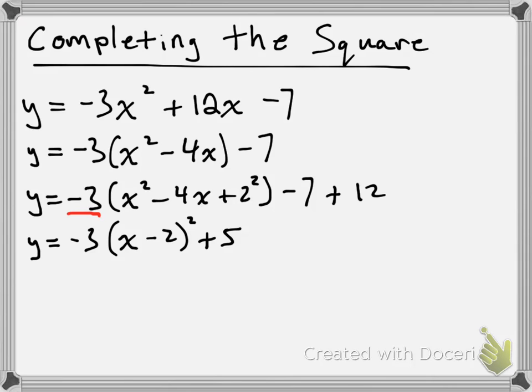So, now that we have it in vertex form, we can actually say what the vertex is. Remember that the x value of the vertex is the x value that will make the stuff inside this set of brackets equal to 0. And the only way to make that stuff inside the brackets equal to 0 is if x is positive 2, because then I'd have 2 - 2 inside my brackets. So my vertex is going to be at (2, 5), which comes from this value here.